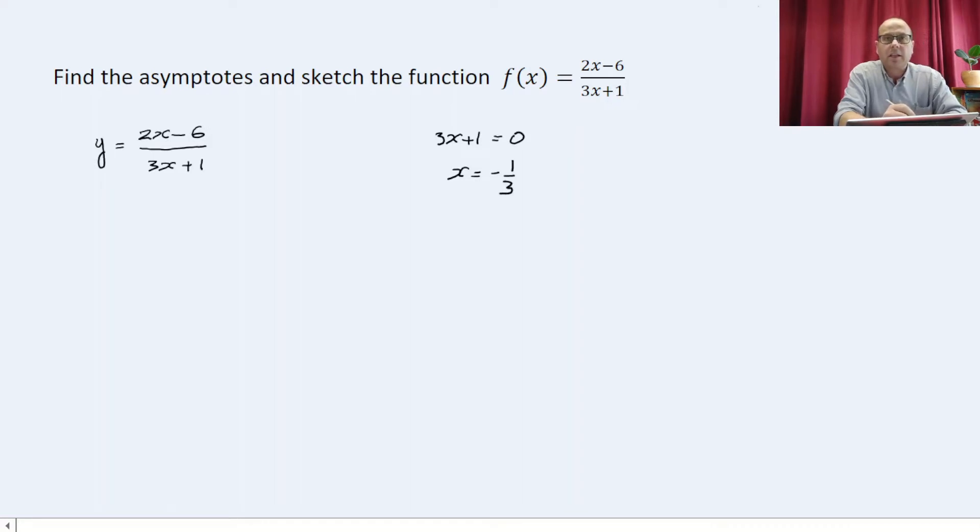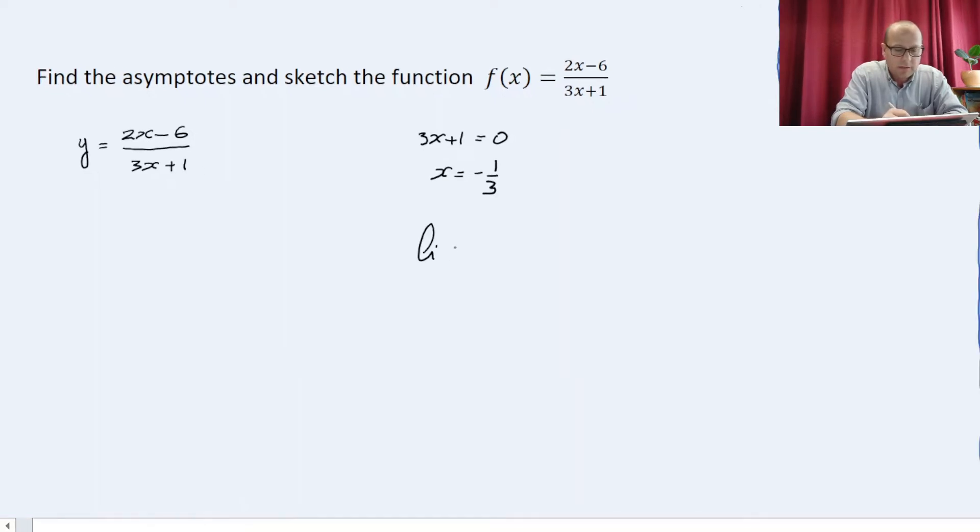And that is the vertical asymptote. To find the horizontal asymptote, I find the limit. So the limit, whenever x tends to infinity, of 2x minus 6 over 3x plus 1.